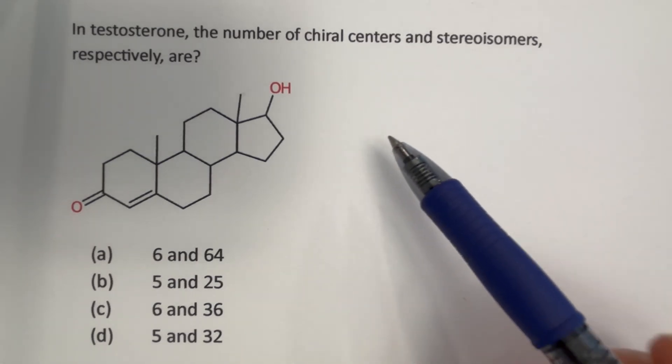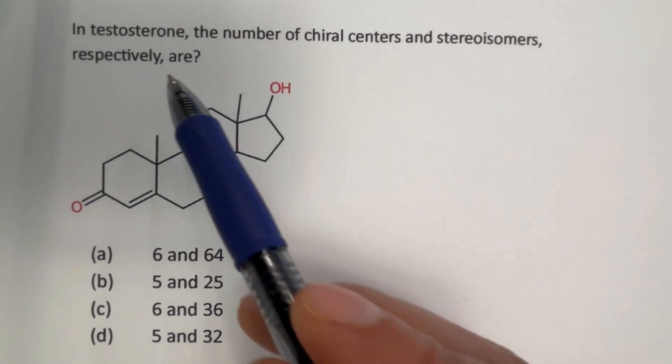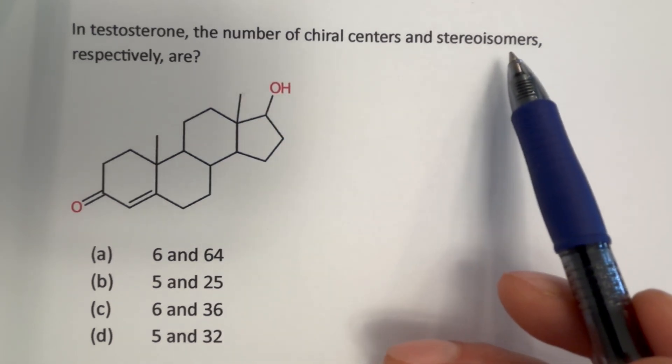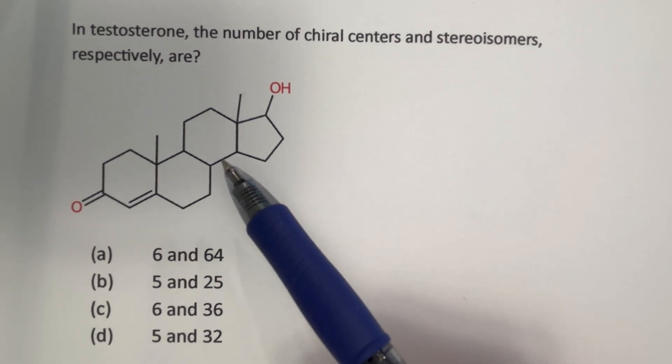Hello everyone. Here is a question from stereochemistry. In testosterone, the number of chiral centers and the stereoisomers respectively are how many?